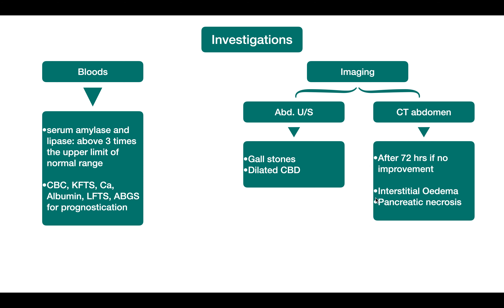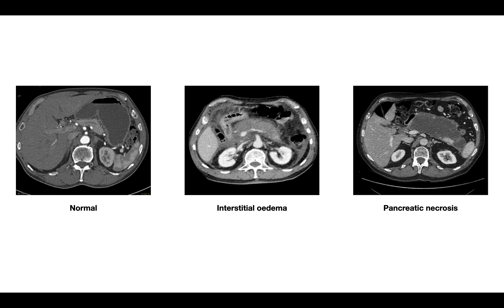In about 85% of patients, CT detects interstitial edema; in 15%, pancreatic necrosis may be found. On CT, normal pancreatic tissue can be seen as a retroperitoneal organ immediately behind the stomach. Comparing normal tissue with swollen tissue demonstrates interstitial edema in acute pancreatitis.